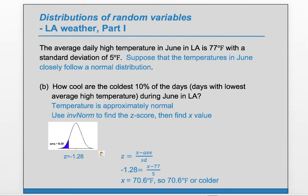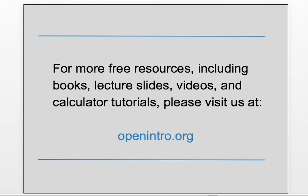So 70.6 degrees Fahrenheit or colder corresponds to how cool the coldest 10% of the days are. That's it for this video. For more free resources check us out at openintro.org.